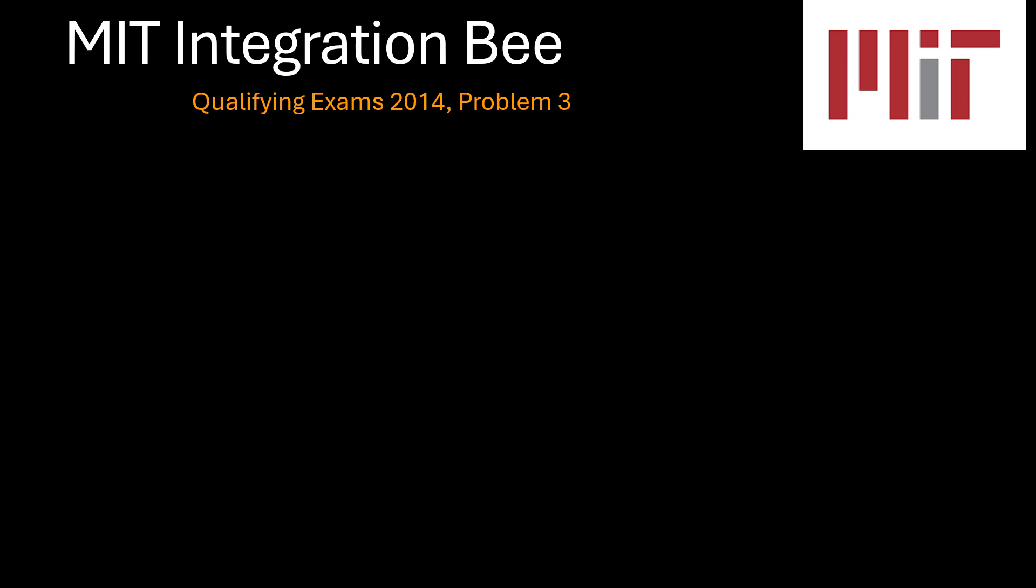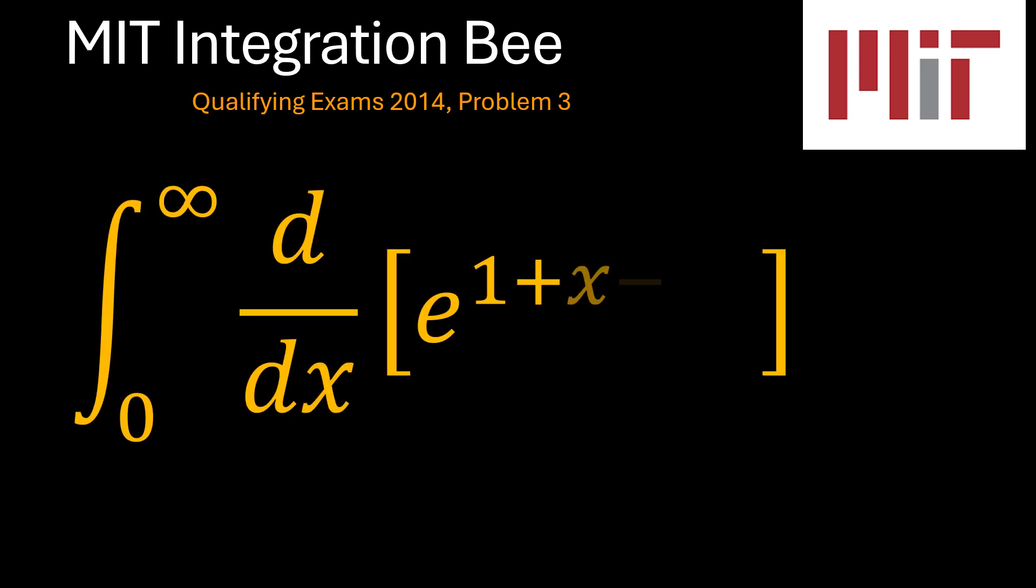This is problem number 3 of the MIT Integration Bee qualifying exam 2014, which is the definite integral from x equals 0 to x tending to infinity of the derivative of e to the power of 1 plus x minus x squared. So it's an interesting problem. There are two ways we may want to look at it, just so that I think we have the ground covered.